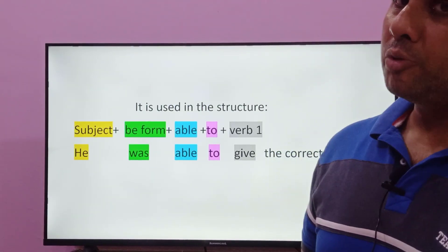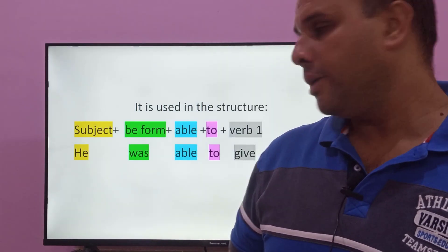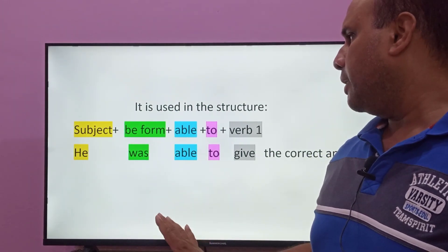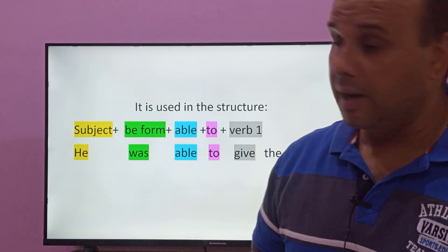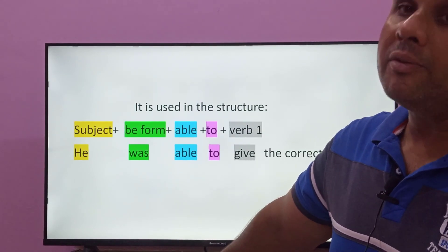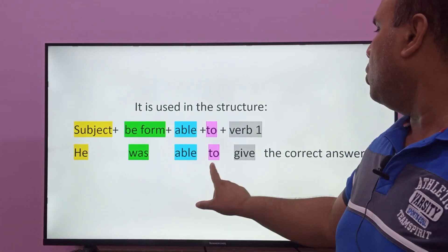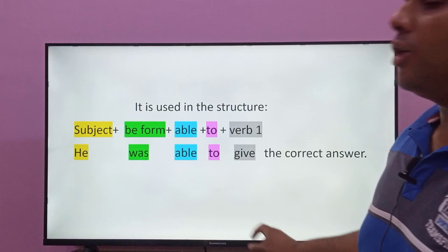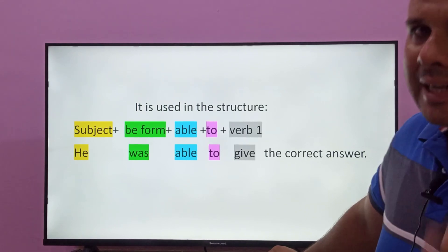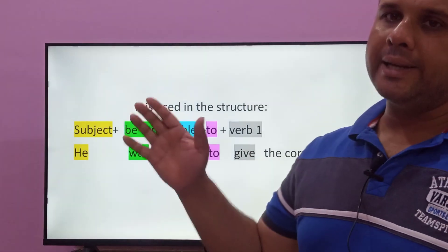So the structure is: Subject + was/is/are + able + to + verb first form. After 'able' we put 'to,' and after 'to' we use the first form of the verb. For example, 'give' is the verb in its first form. So the sentence becomes: 'He was able to give the correct answer.' In this way we can form sentences using the word 'able.'